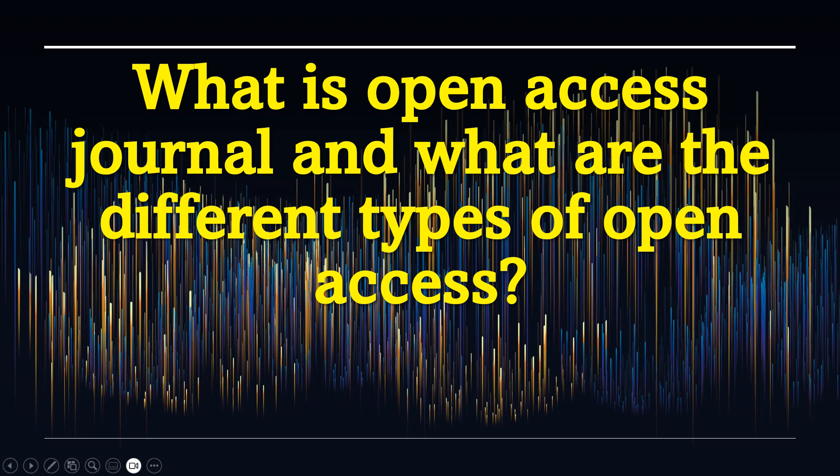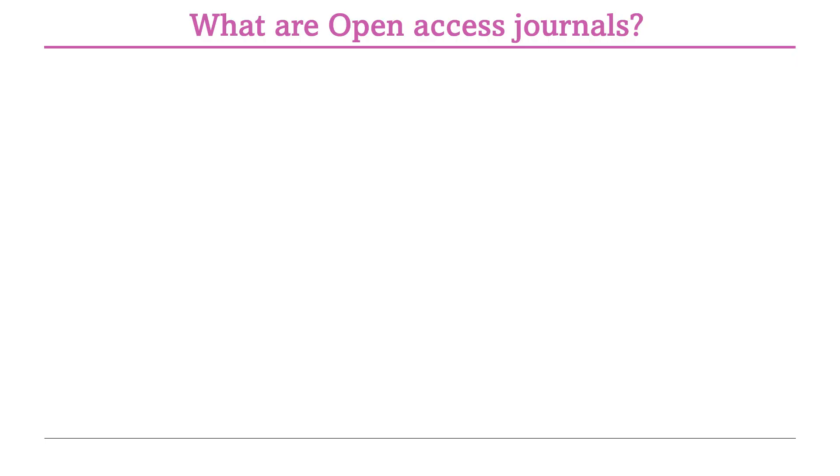Hello friends, welcome to my channel. Today we are going to talk about open access journals. We will see what open access journals are, the different types of open access journals, and how we categorize them. Whenever you submit or look at open access journals, you might have seen different categories like gold open access, platinum open access, and hybrid journals.